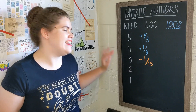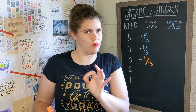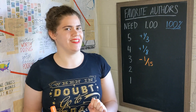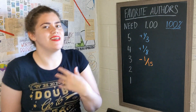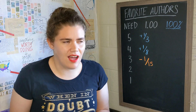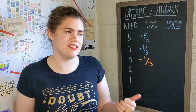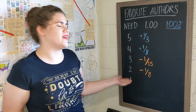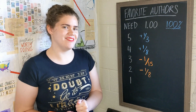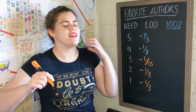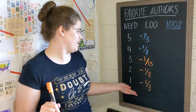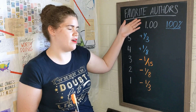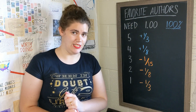A three-star brings that author a negative fifteenth of a point — not that much negative, but it is some, because three-star books are books I like but not books I love or am obsessed with. A two-star book brings negative eighth of a point. And a one-star book brings the hefty penalty of negative a third of a point — just three one-stars from an author could bring them from favorite author status all the way back down to zero.